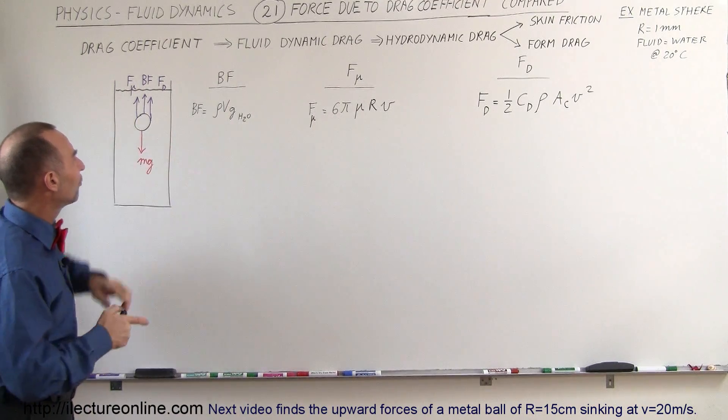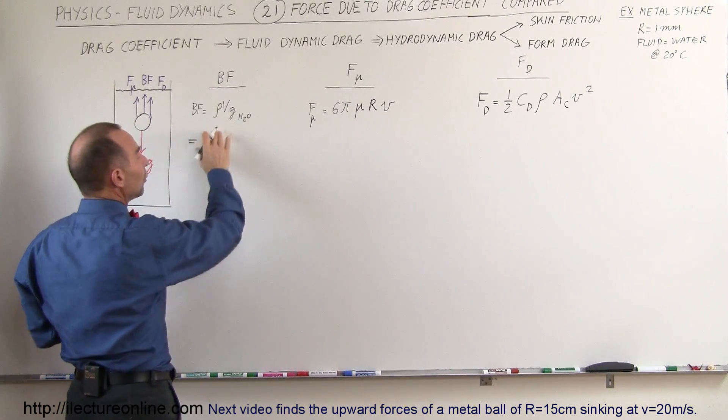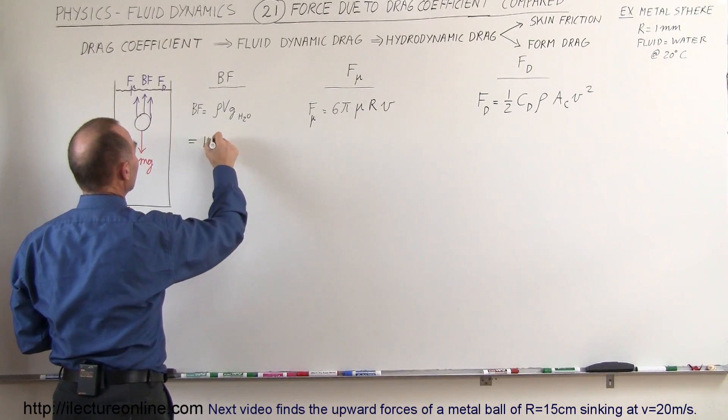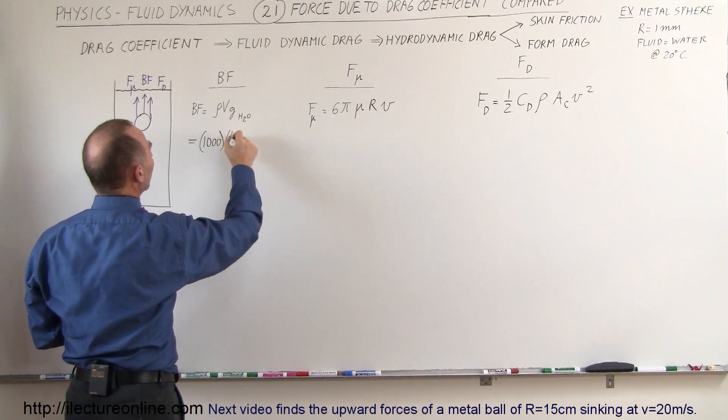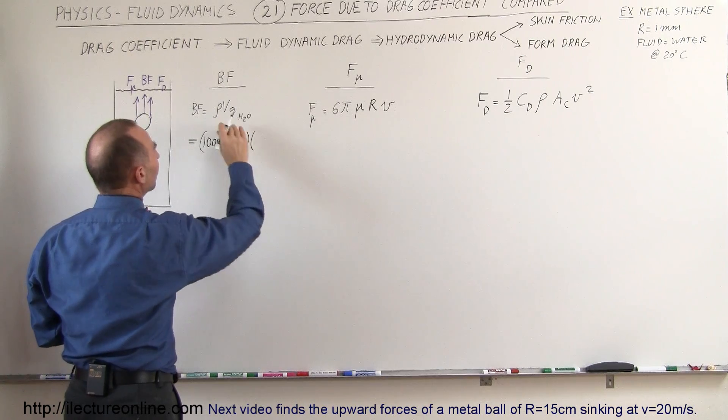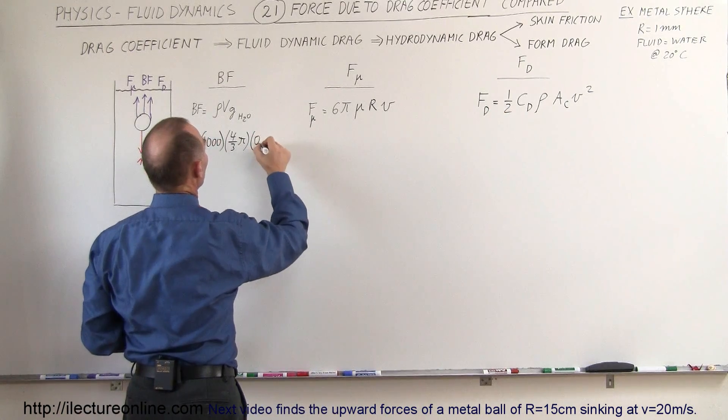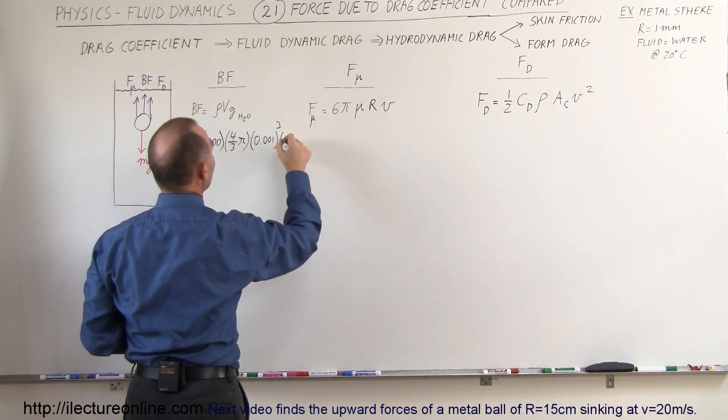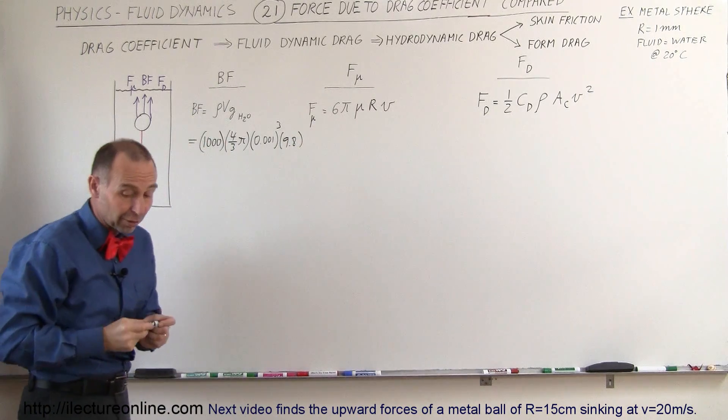The buoyancy force would be equal to the weight of the displaced liquid, which means the density of the liquid, which would be a thousand. I'm going to skip the units because I'm running out of room. The volume would be 4/3 times π times the radius cubed, the radius being 1 millimeter, that would be 0.001 cubed, and then g would be 9.8.